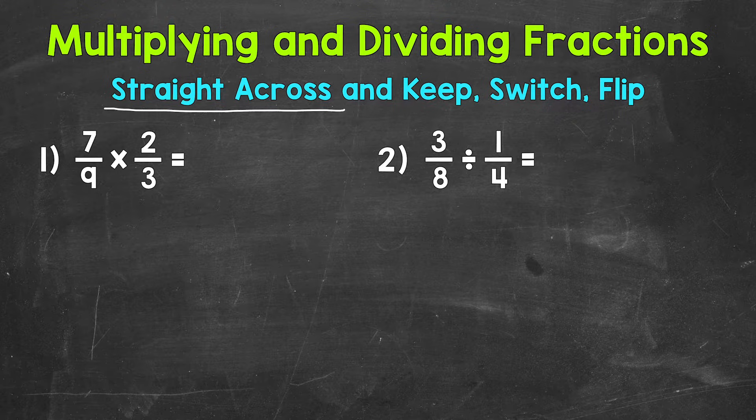So let's start with the numerators. Seven times two, that gives us 14. Our denominators, nine times three, that gives us 27. So our answer is 14 27ths.